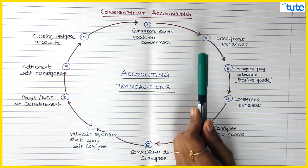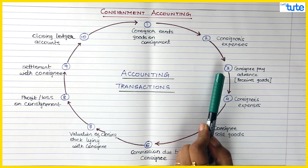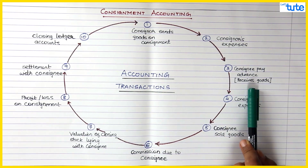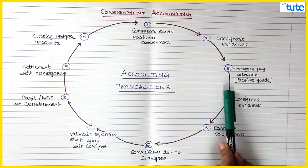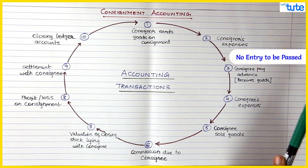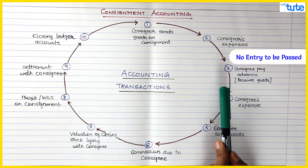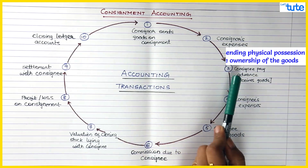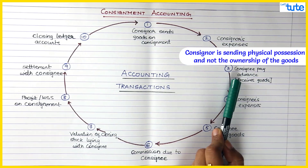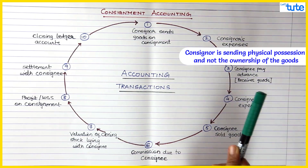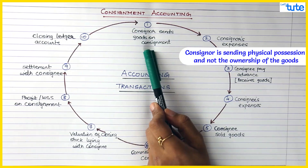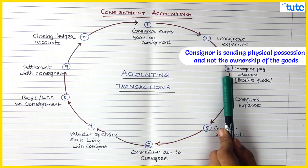Next, the goods are received by the consignee. But when the consignee receives the goods, there will be no entry to be passed in the books of the consignee, because here the consigner has only sent physical possession of the goods to the consignee, but the ownership still remains with the consigner — as we have seen in the previous sessions.